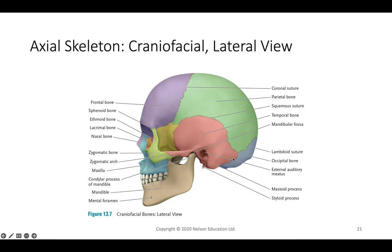The temporal bone has several important features. It connects the jaw via the mandibular fossa, an indentation for the mandible. It connects to the cheekbone via the zygomatic arch, linking the temporal bone to the zygomatic bone. The mastoid process and styloid process are sections that serve as attachment points for muscles.